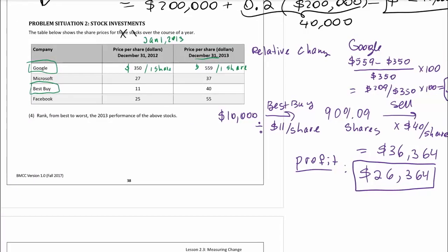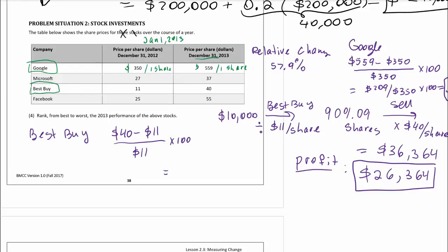So that's the relative change for Google: 59.7%. For Best Buy, the relative change is: 40 minus 11, divided by 11, multiplied by 100%. That's $29 divided by 11, giving a whopping 263.6% increase. That's the relative change for Best Buy.